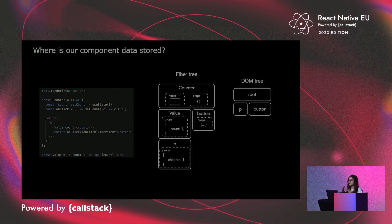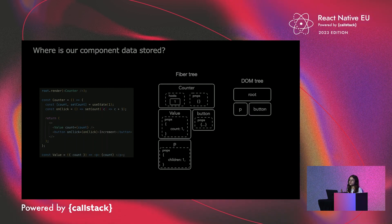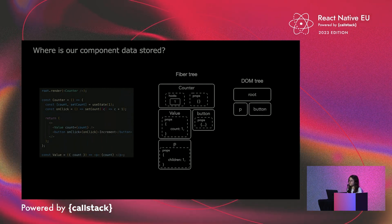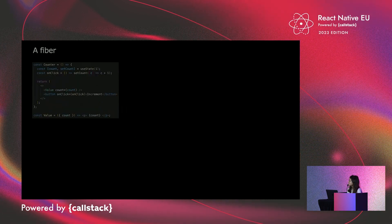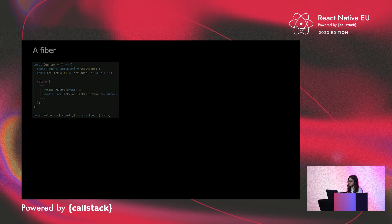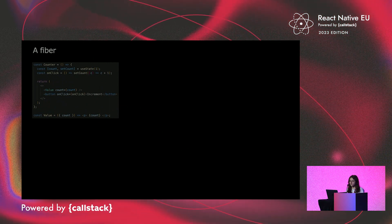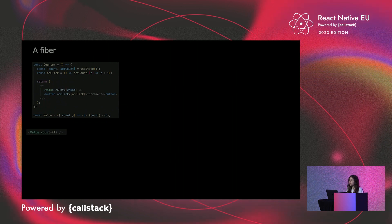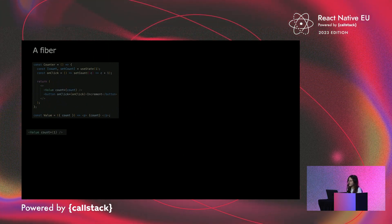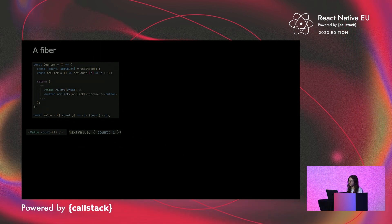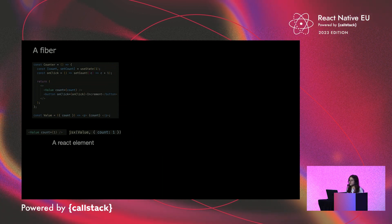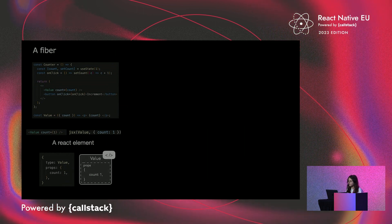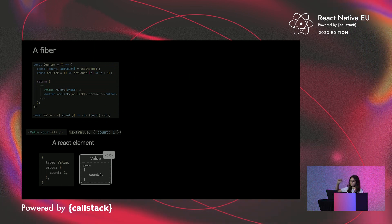The first time we run our code, React creates this fiber tree. Every time we instantiate a React component, it adds a node into the tree, and such a node is called a fiber. Let's take a look at the value component. When we instantiate value, we're using JSX syntax. JSX is actually just syntactic sugar and is equivalent to the call of the JSX function, or createElement up to React 17. So when we call value with this JSX syntax, we actually call this JSX function, which creates a new React element. A React element is an object that has the type and props of the component you're instantiating. Counter returns two React elements: value and button.